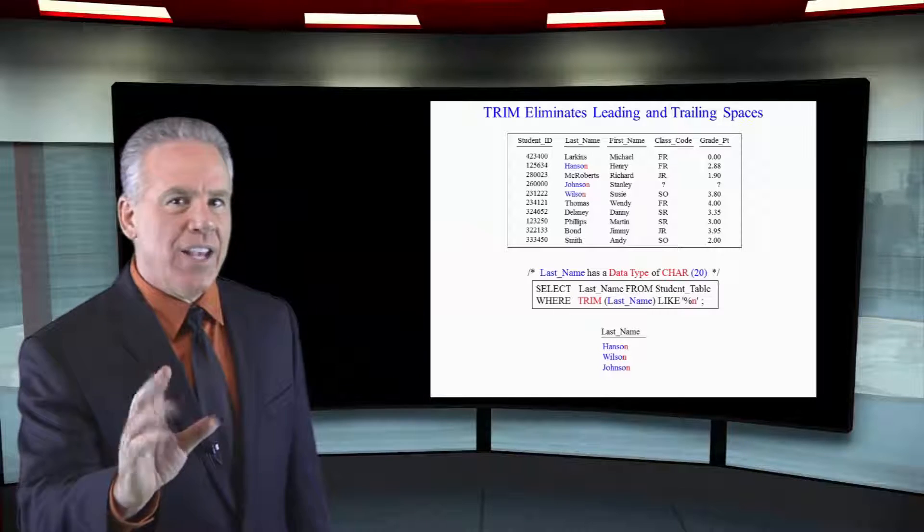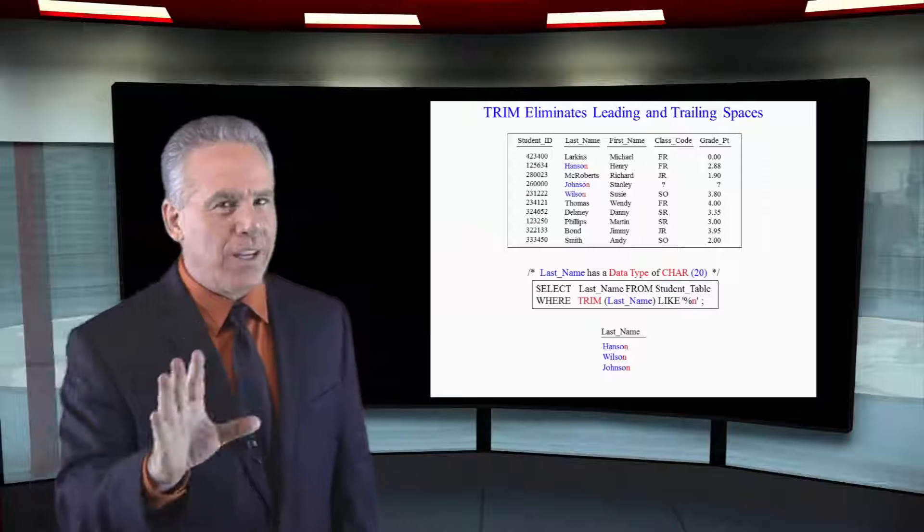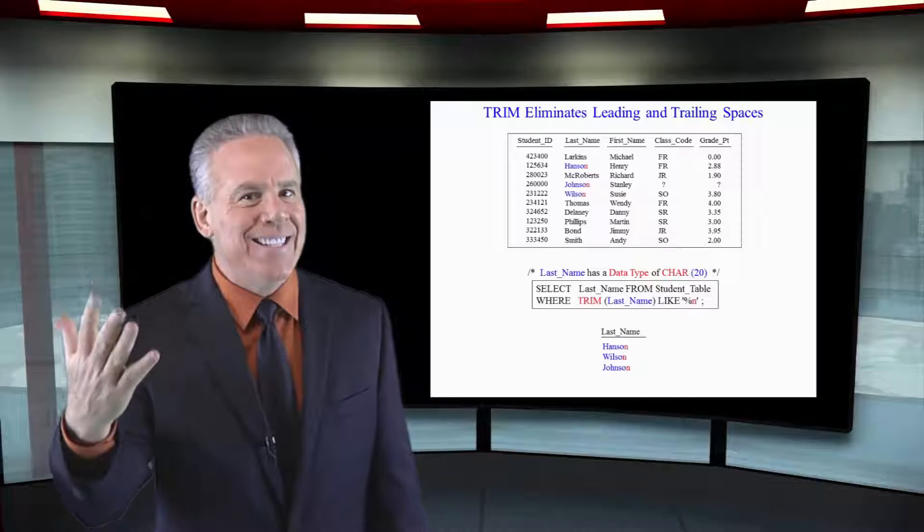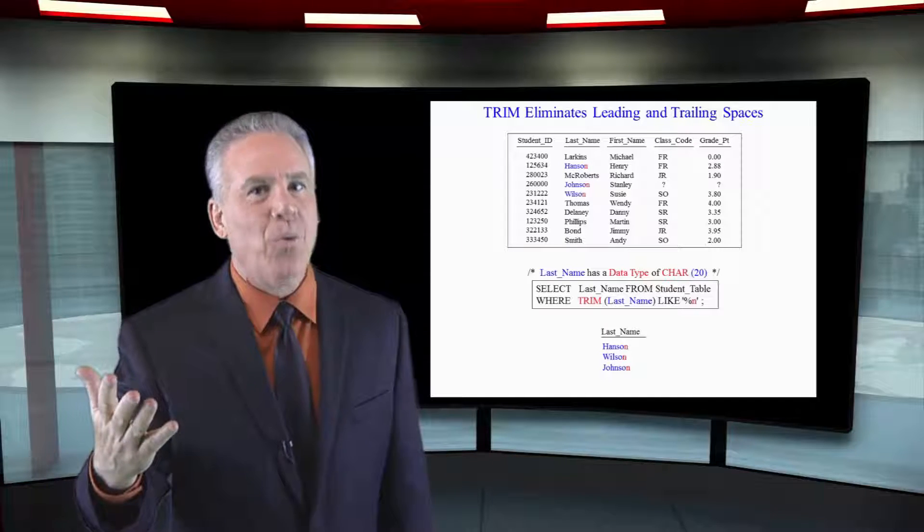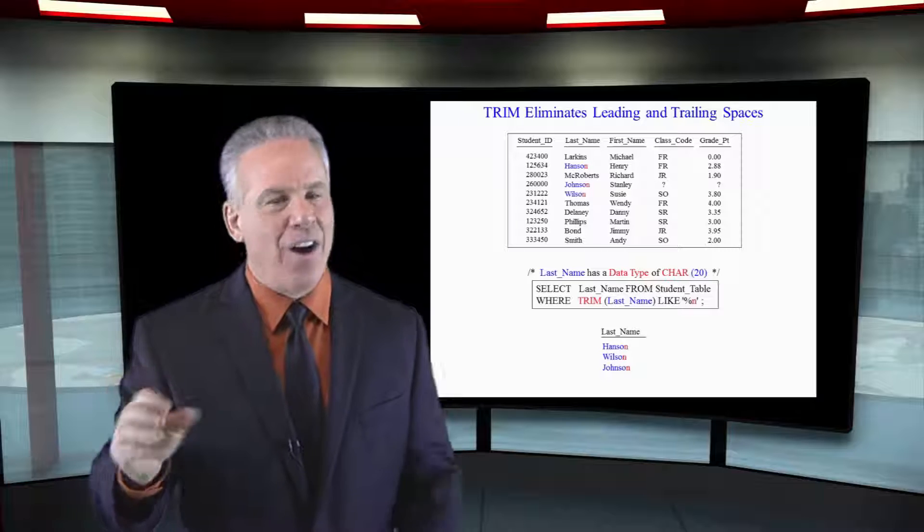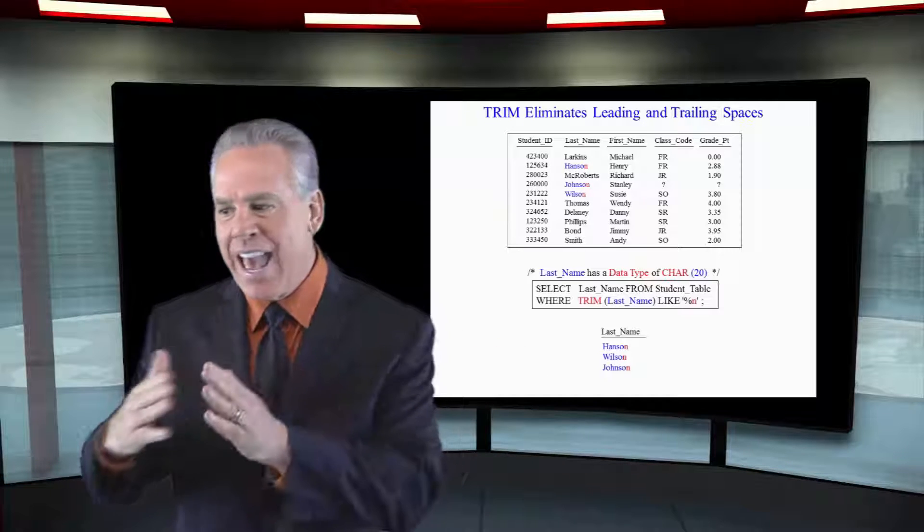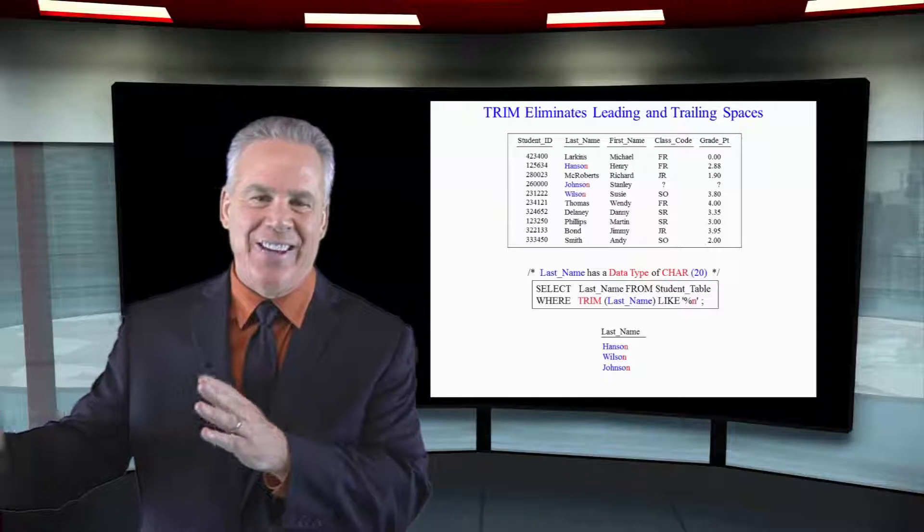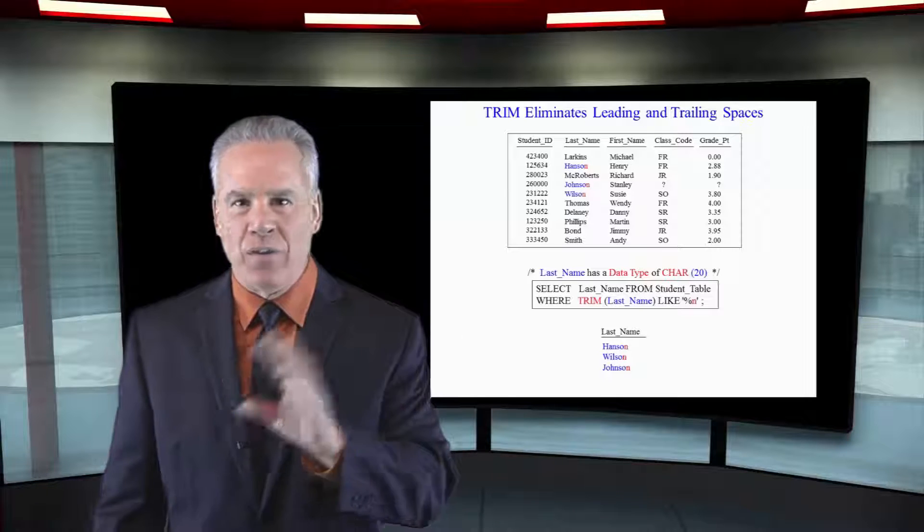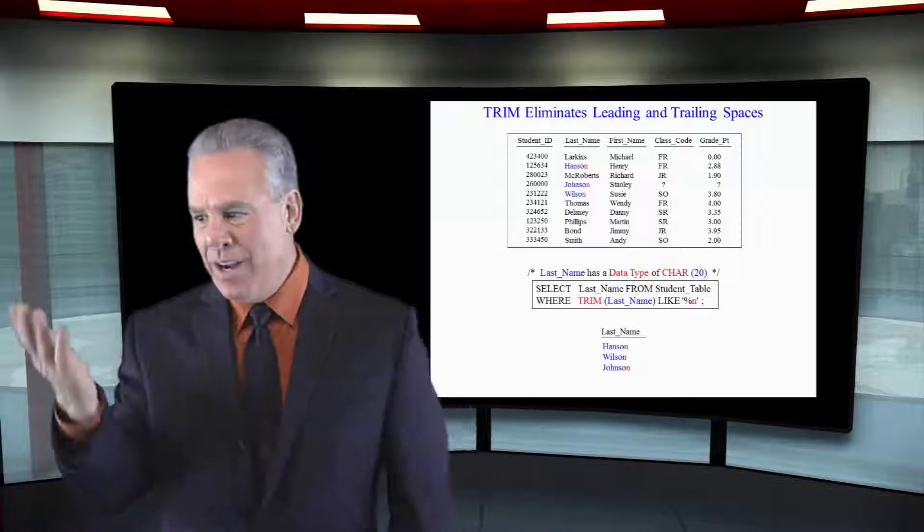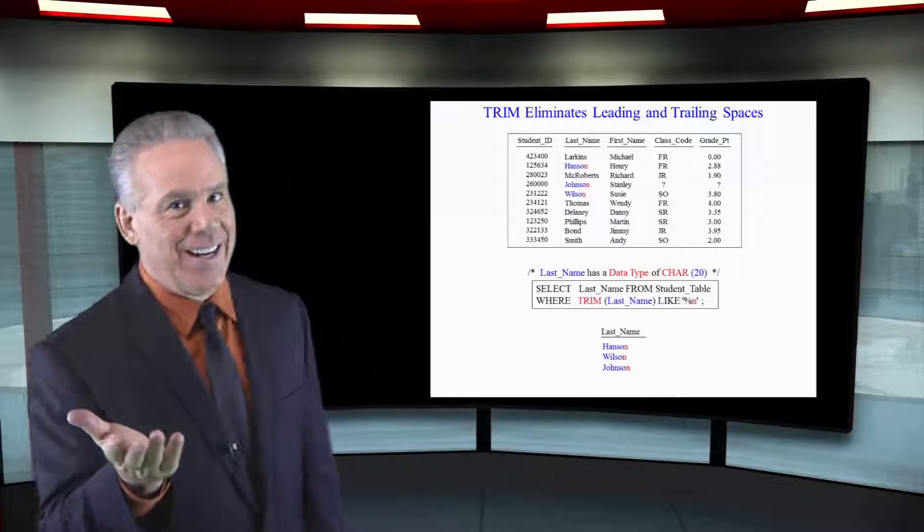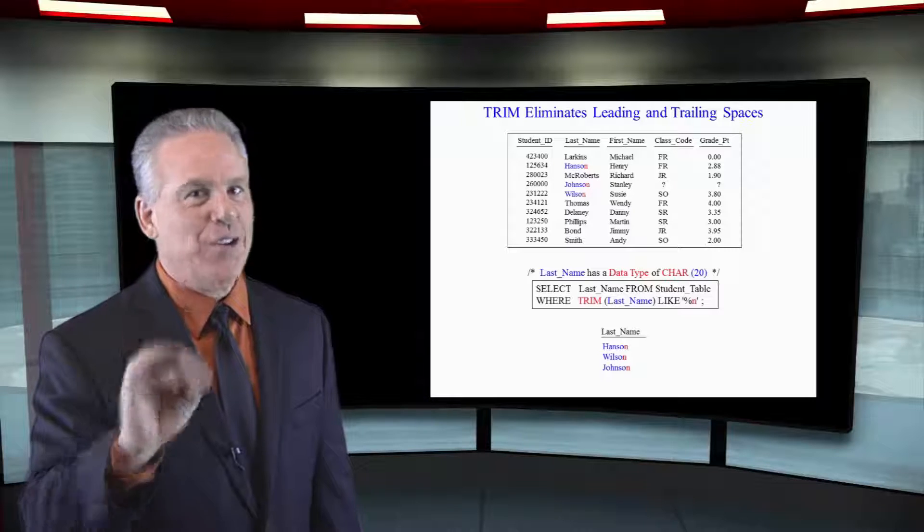In this case we're using the LIKE command and we're looking for anybody whose last name ends in an N. Well, we have to TRIM that, otherwise we'll get nobody back because it has spaces at the end. So this is a case where if you want the last name where it ends in N and it's character data type, you probably need to TRIM it.